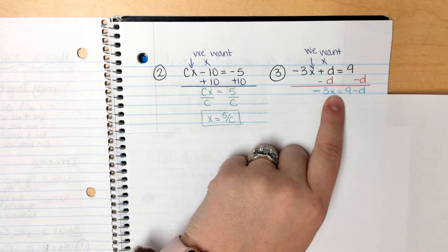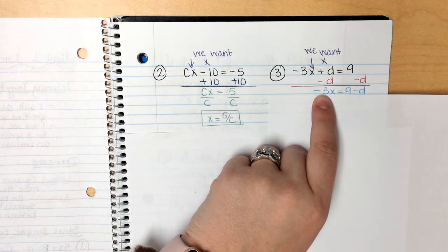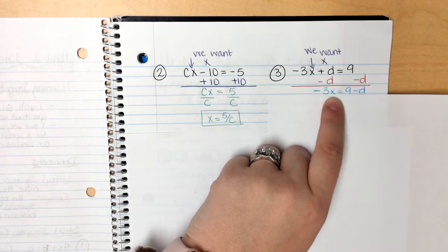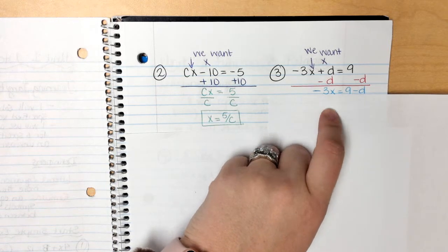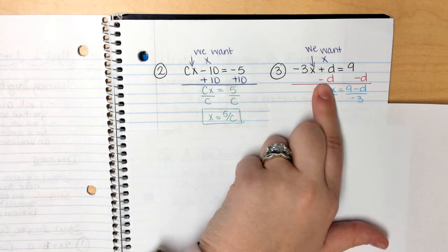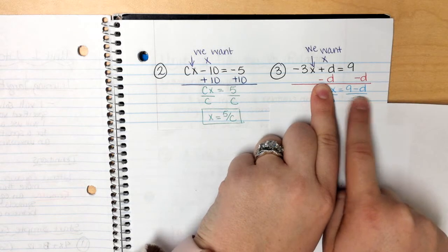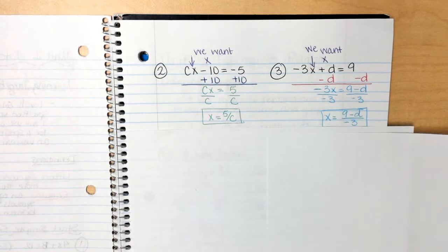Now remember, this is still you. You still need some space. You love your best friend, but you just need him to go away. And the only way that you and your best friend can go away is if you divide yourself from each other. This is negative 3 and negative 3. Those guys cancel out. And just like last time, if I cross them off, you have 9 minus d over negative 3. And that is your answer.